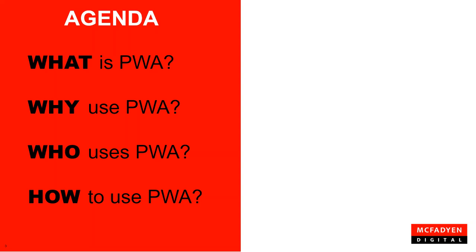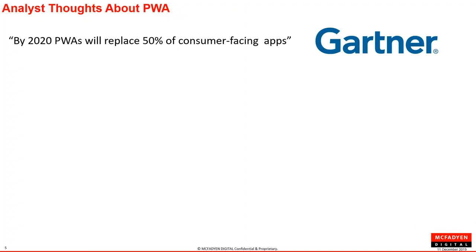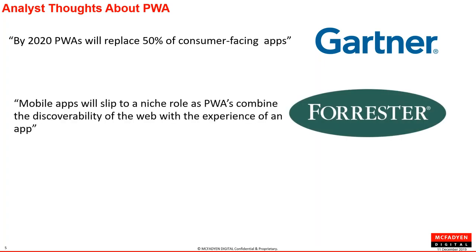Now on to the meat of the presentation: what is a PWA, why would you use a PWA, who uses PWA and the success they're seeing, and how to implement PWA. In the how section, we'll also give you a demo of the McFadden PWA accelerator on desktop, tablet, and smartphone. Gartner stated that half of consumer-facing apps will be replaced by PWA — a pretty broad statement, but there is significant uptick in Progressive Web Apps as a platform. Forrester also has very positive things to say, viewing mobile apps as essentially slipping away.